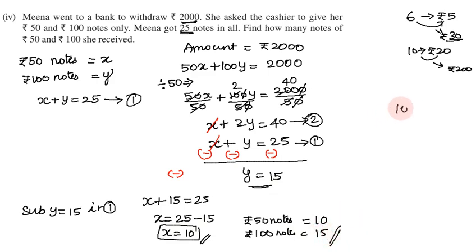10 plus 15 equals 25. 10 times 50 is 500, 100 times 15 is 1500. Total is 2000. Amount is correct.